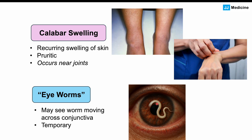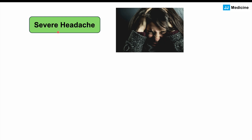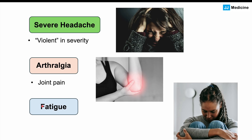The worm can be in the eye temporarily and has also been noted in the eyelid. Importantly, unlike river blindness, there is no permanent damage to the eye. Other findings include severe headaches described as violent in severity, arthralgia or joint pain, muscle aches and pains, fatigue, and swollen tender lymph nodes.